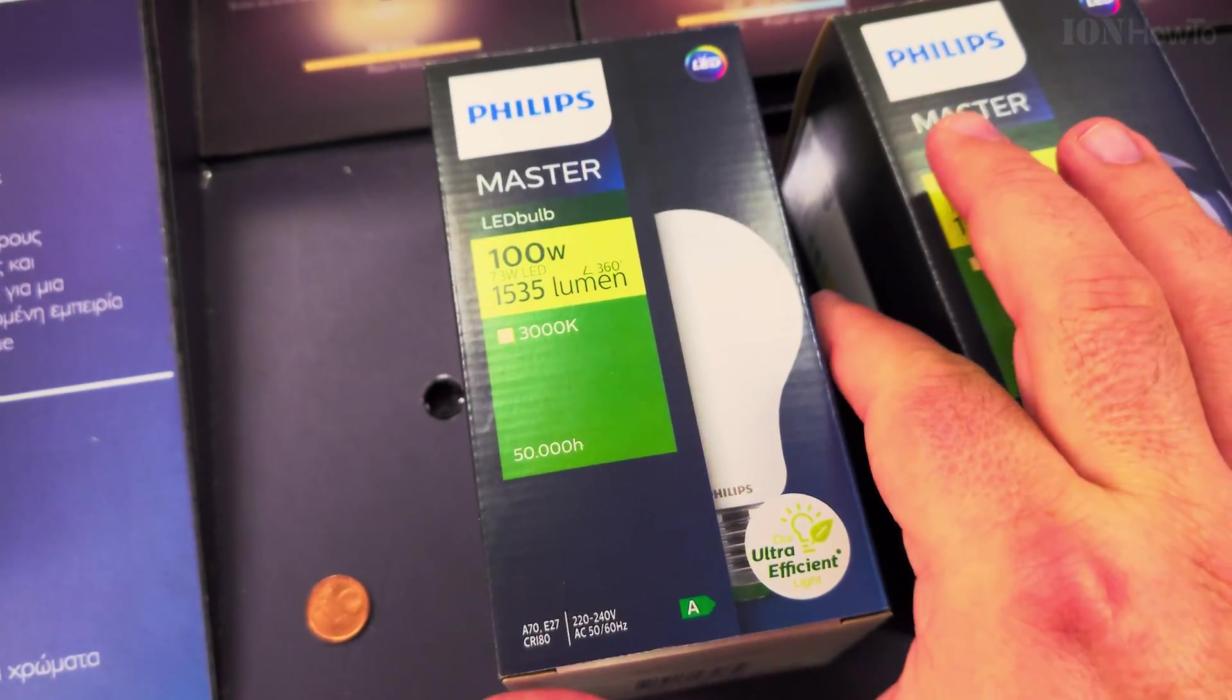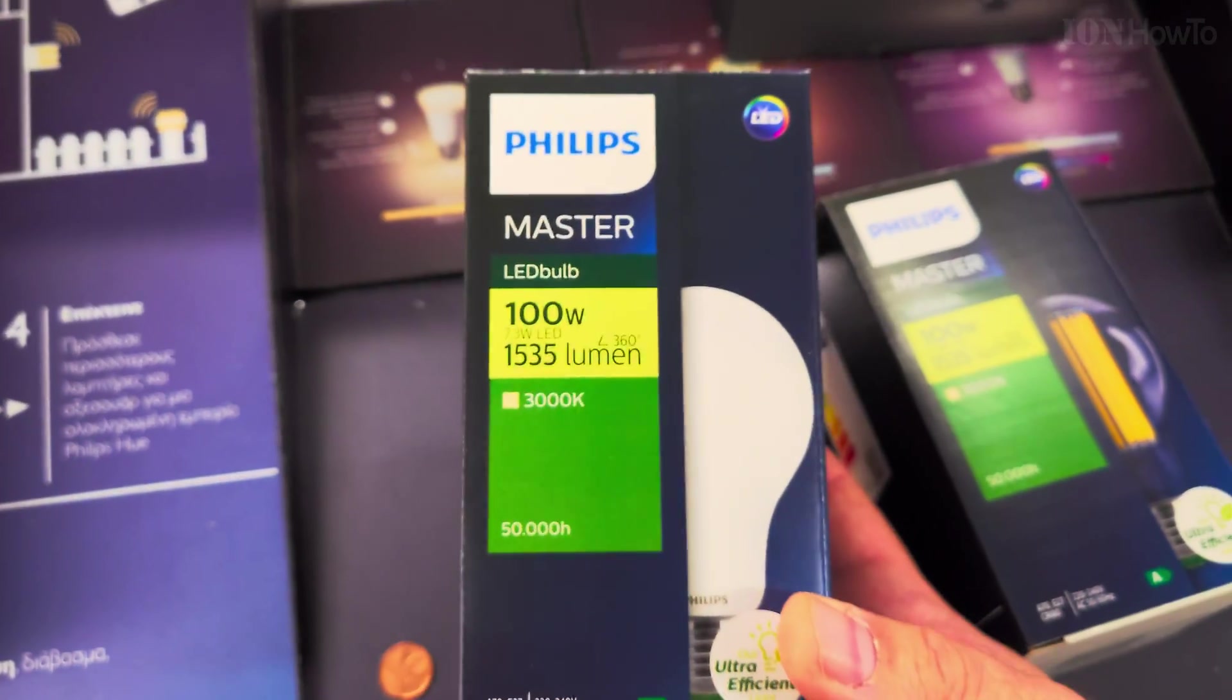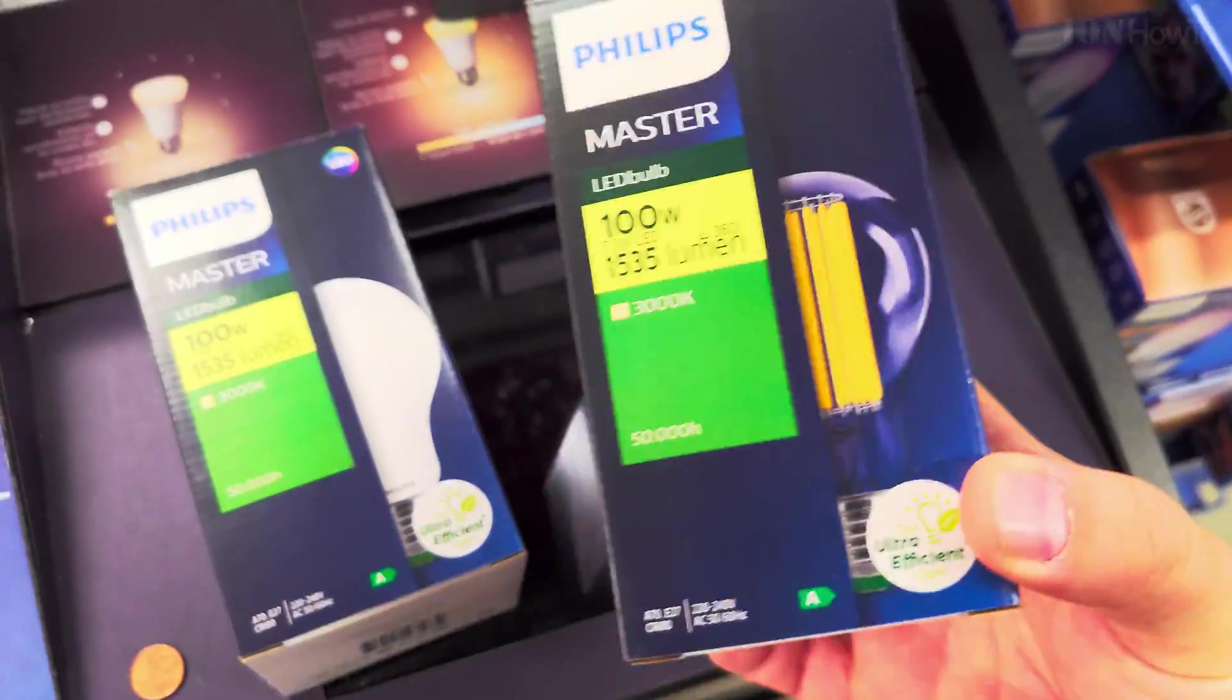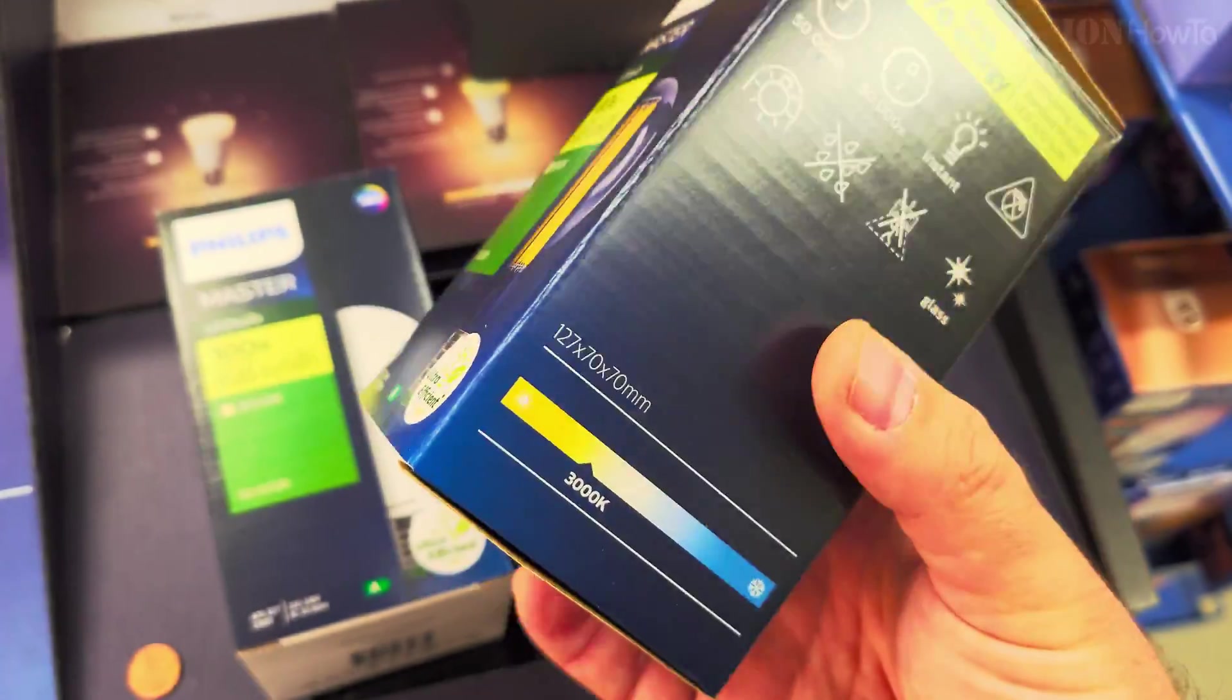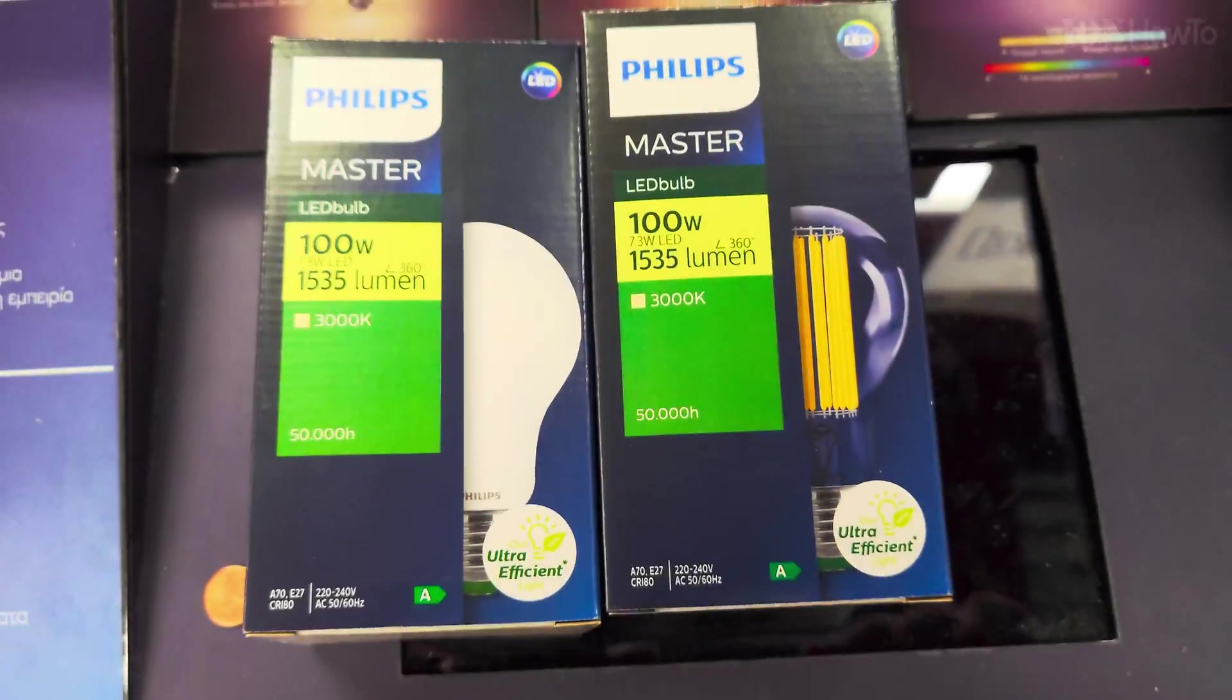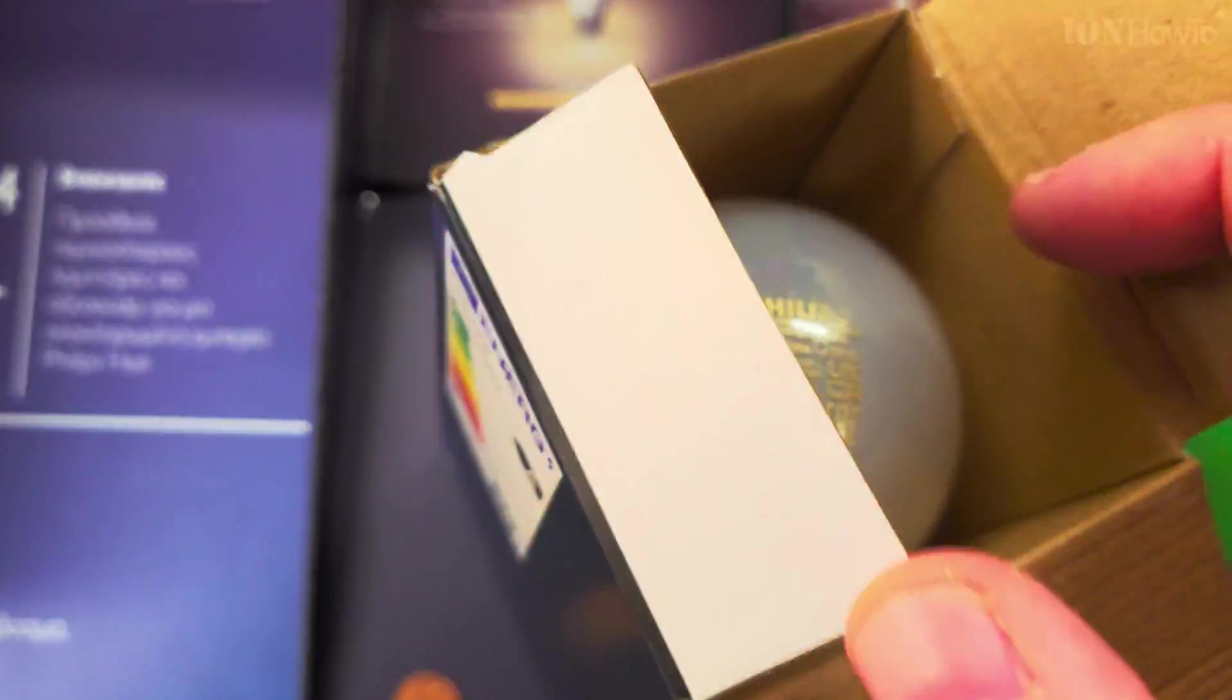In this video I show you a comparison between Philips Master and Philips Core Pro, really good light bulbs made with LED filament that has really good efficiency.